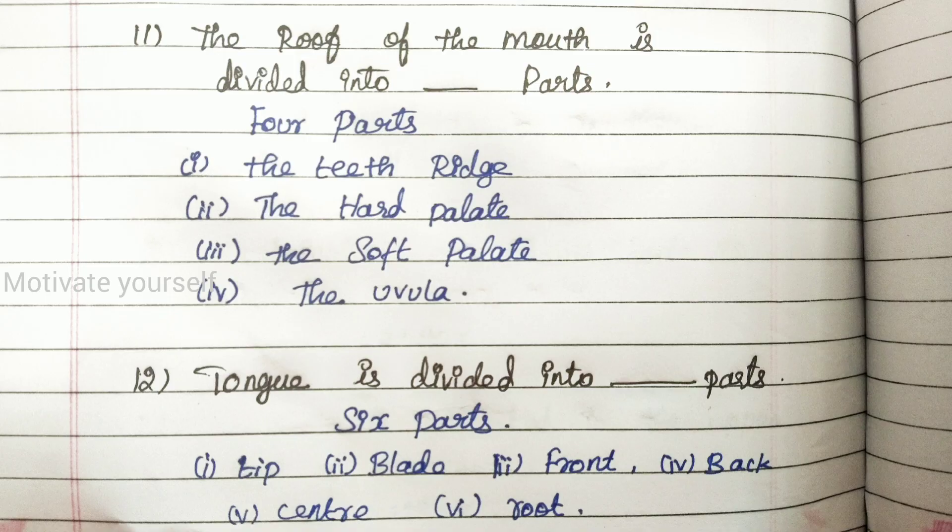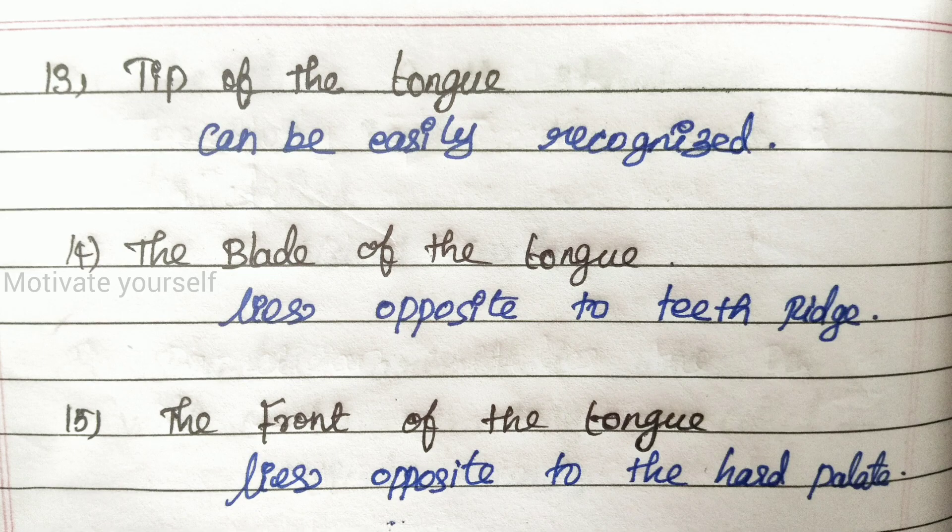Question 12: The tongue is divided into — Answer: 6 parts: tip, blade, front, back, center, and root.